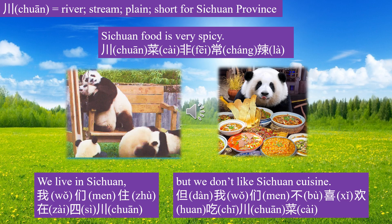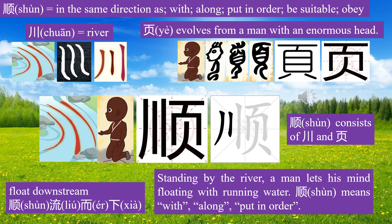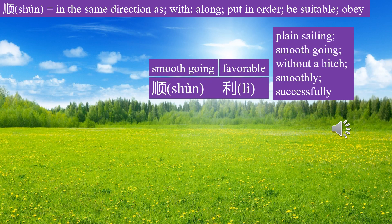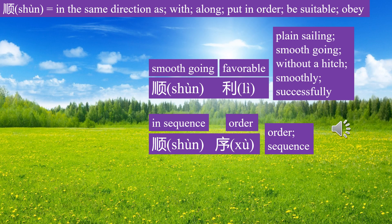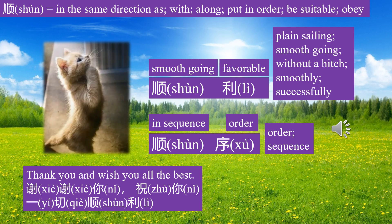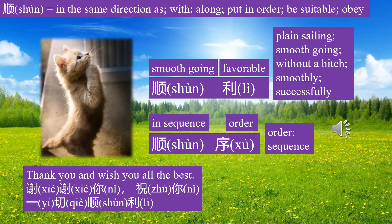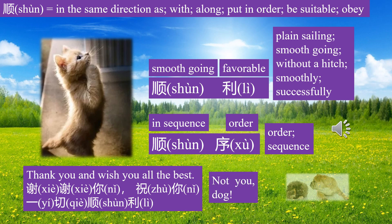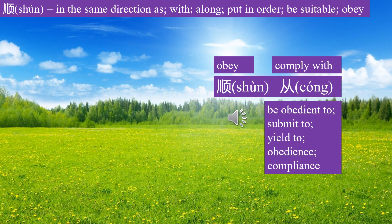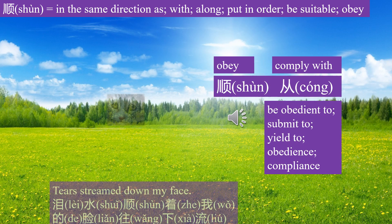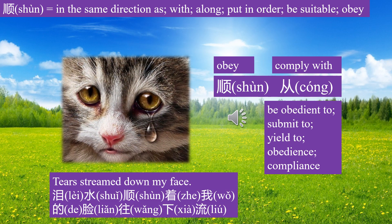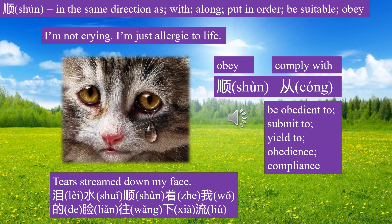Character Shun means in the same direction, smooth, obey. 顺利 means smooth going. 顺序 means order. Thank you and wish you all the best — 谢谢你，祝你一切顺利. Tears streamed down my face — 泪水顺着我的脸往下流. I'm not crying, I'm just allergic to life.